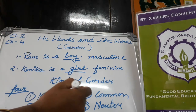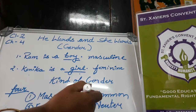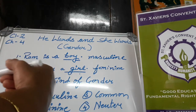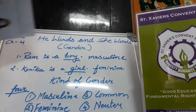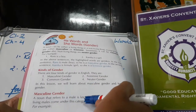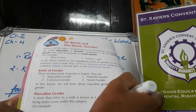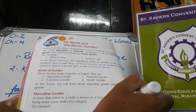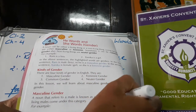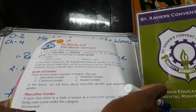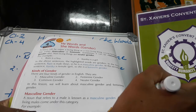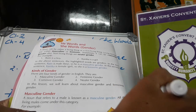Now we will discuss masculine gender. Look at it in your book. Masculine gender: a noun that refers to a male is known as masculine gender. All living males come under this category — all male animals, all male birds, and human beings also.